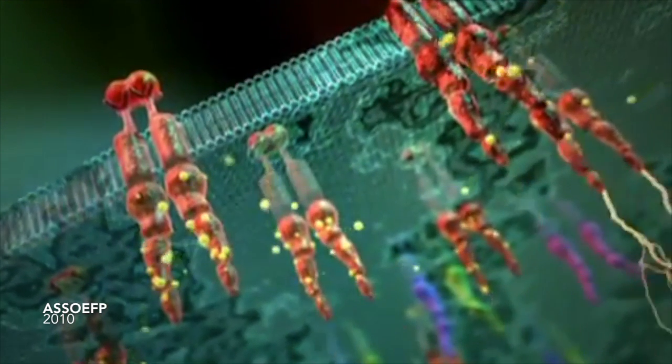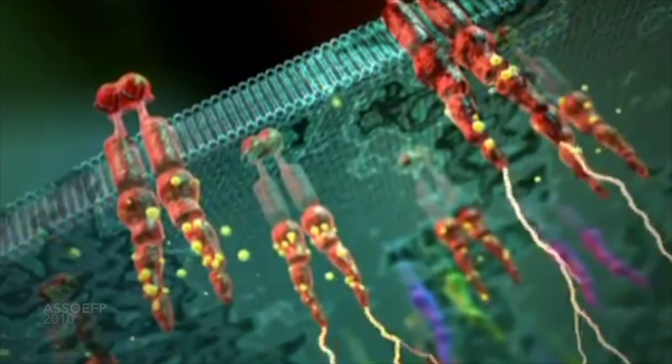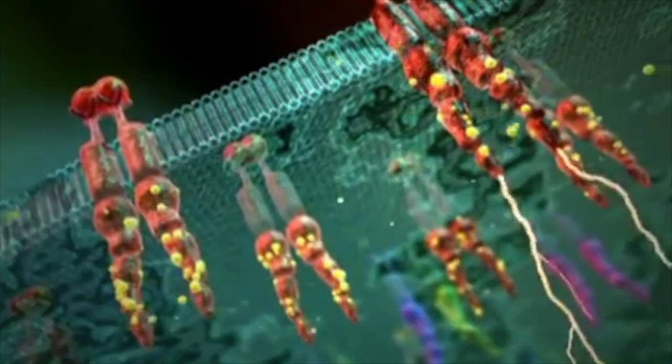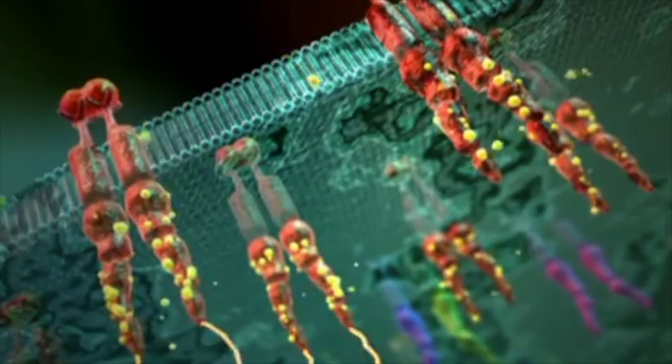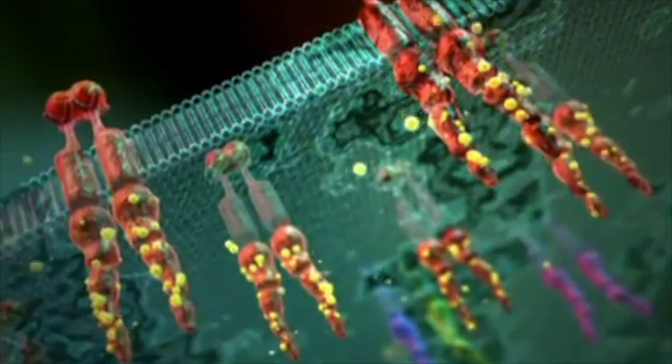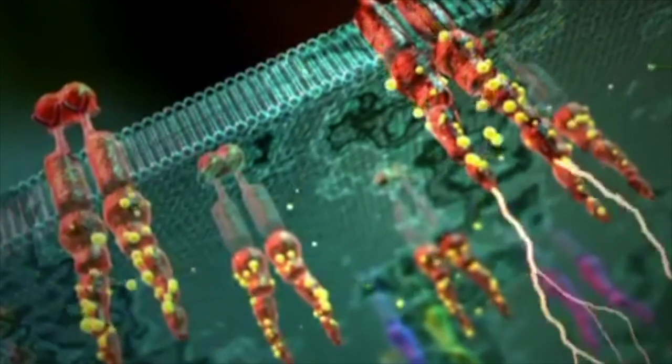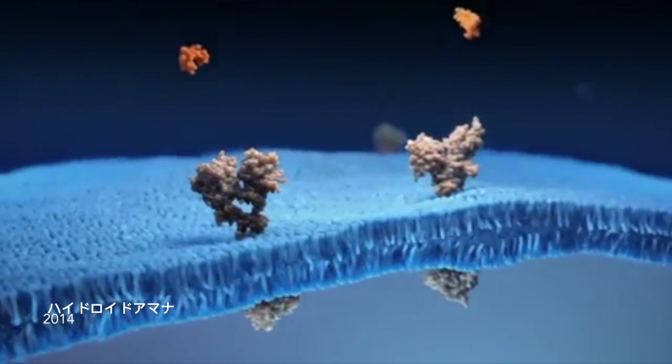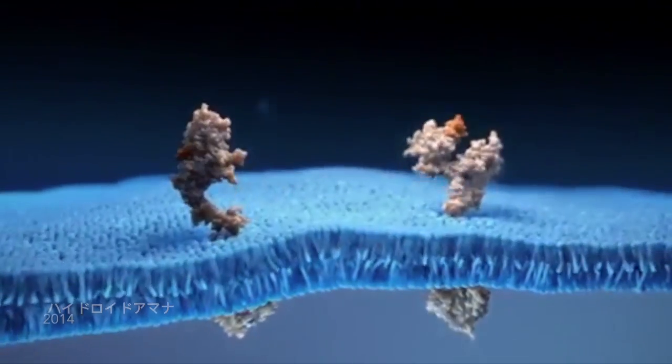Epidermal growth factor receptors function as molecular machines which transmit external information across the cellular membrane. Messages are conveyed through a chain of events cascading from the extracellular to intracellular domains. First, a growth factor binds to the large glycosylated extracellular ligand binding domain.